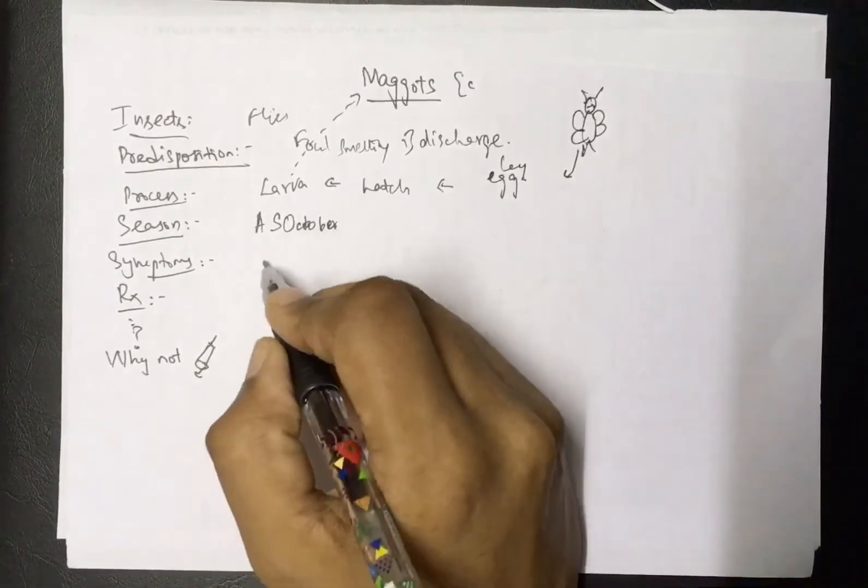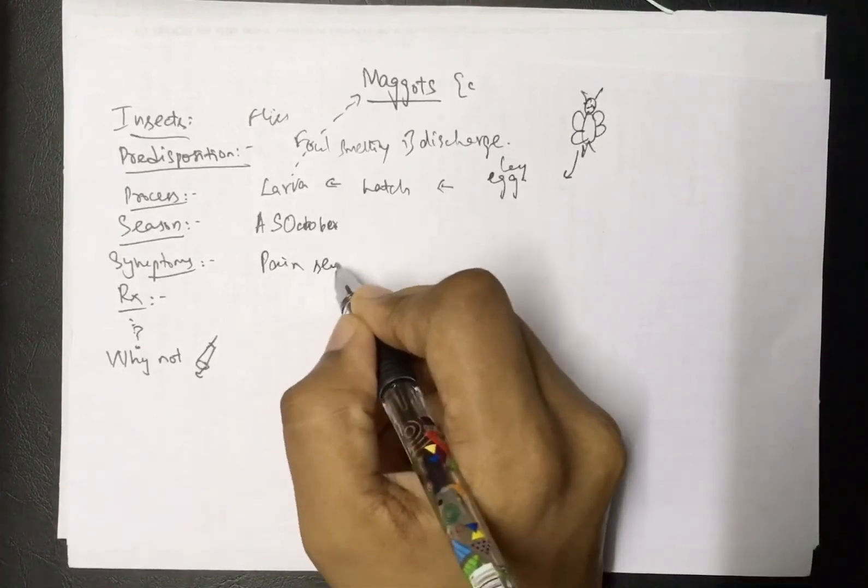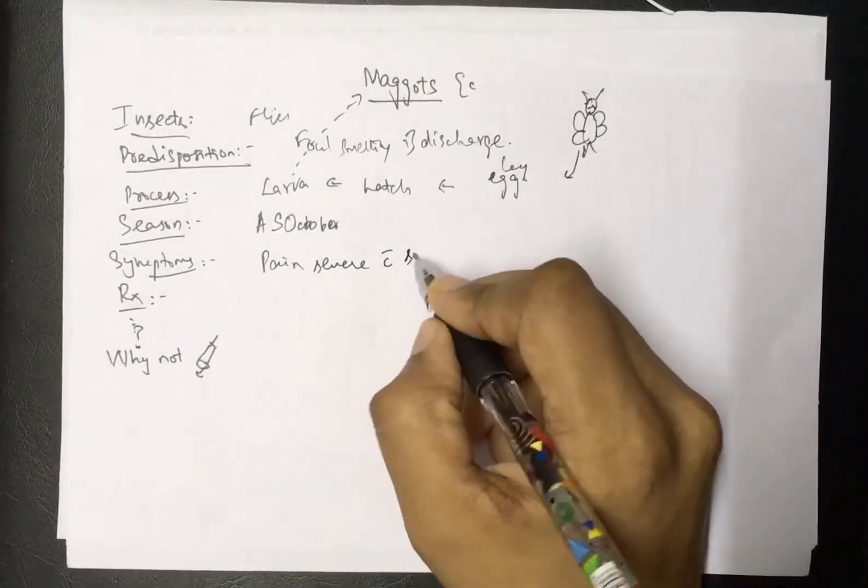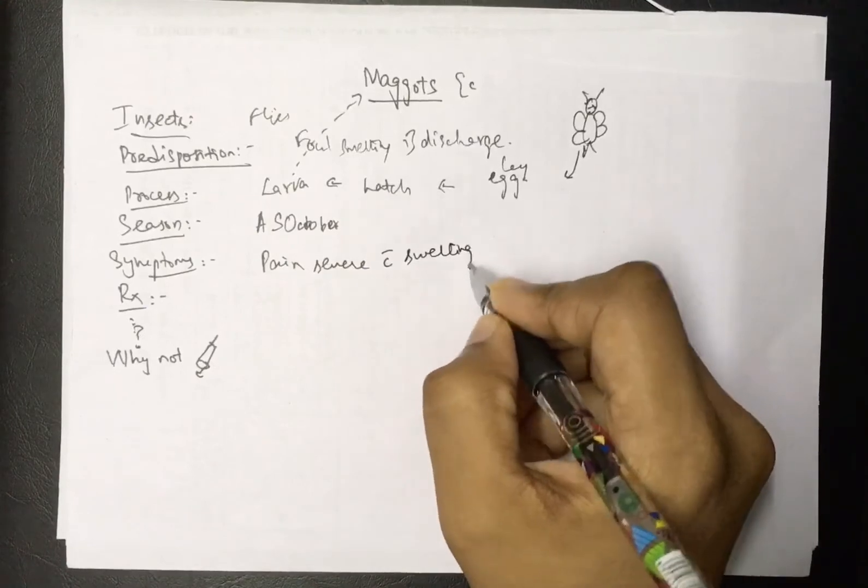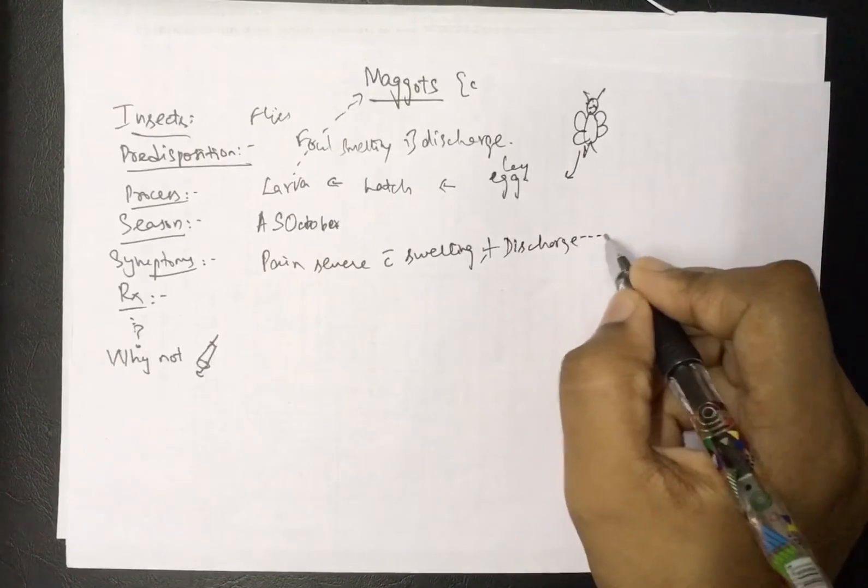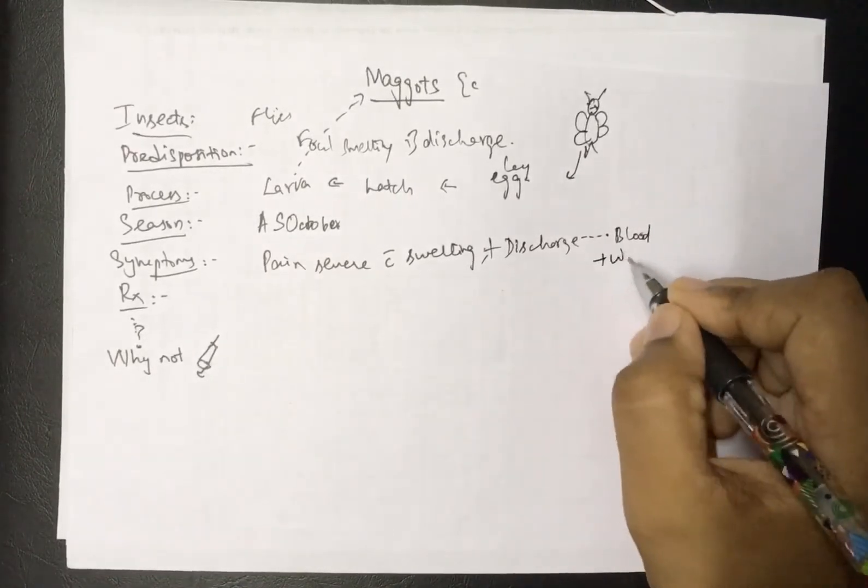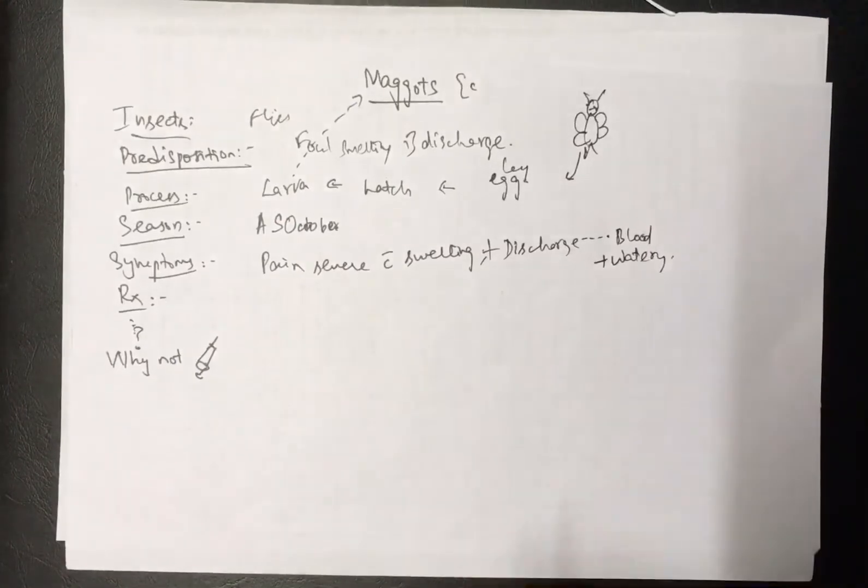The symptoms: there's going to be severe pain, often associated with swelling in the ear and around the ear, plus a discharge. This discharge has a typical characteristic - it's blood-stained and watery. So there's going to be severe pain, swelling around the ear, and a blood-tinged watery discharge.